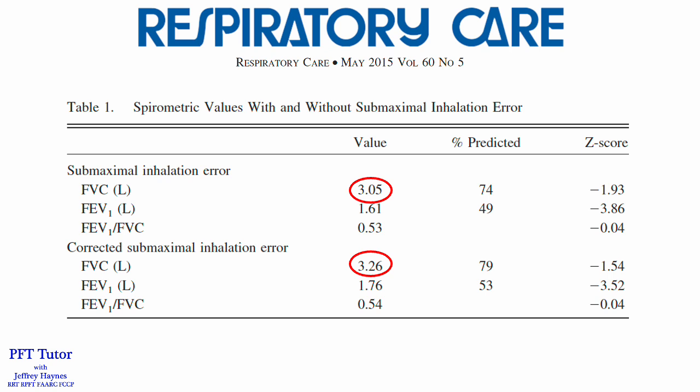However, this error had a significant impact on the forced vital capacity. When there was a submaximal inhalation error, the recorded forced vital capacity was 3.05, with a Z-score of minus 1.93. When the submaximal inhalation error was corrected, the forced vital capacity went up to 3.26 liters, and this became a normal value with a Z-score of minus 1.54.